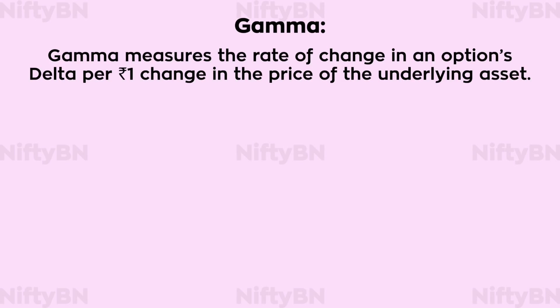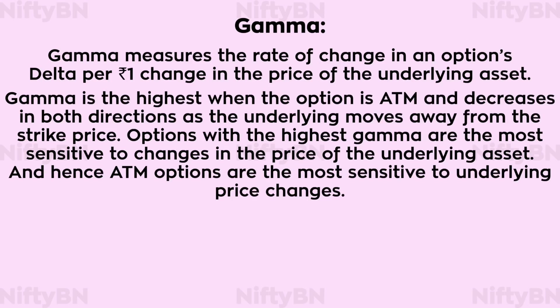Gamma measures the rate of change in an option's delta per rupee change in the price of the underlying asset. Gamma is the highest when the option is at the money and decreases in both directions as the underlying moves away from the strike price. Options with the highest gamma are the most sensitive to changes in the price of the underlying asset, and hence at-the-money options are the most sensitive to underlying price changes.